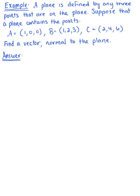A plane is defined by any three points that are on the plane. Suppose that a plane contains the points A, B, and C as given above. Now, find a vector normal to this plane.